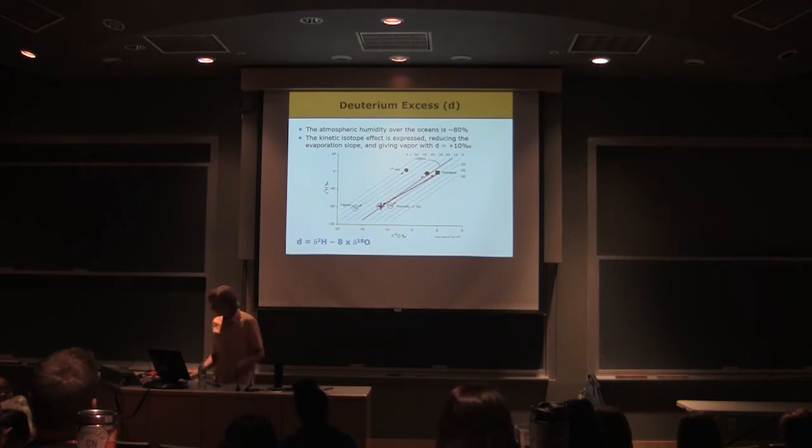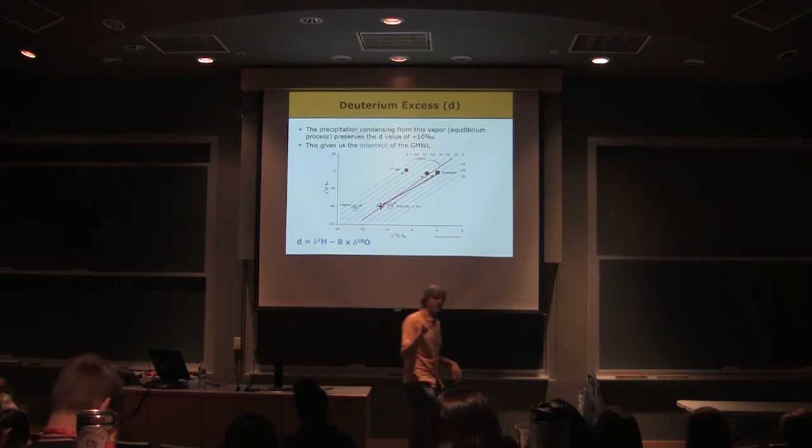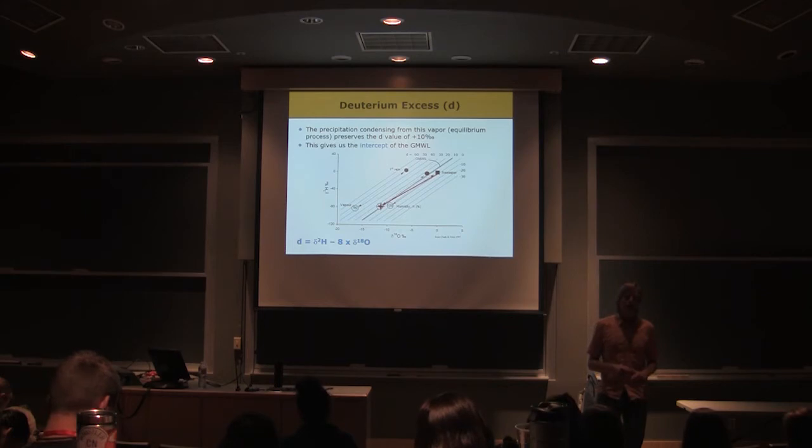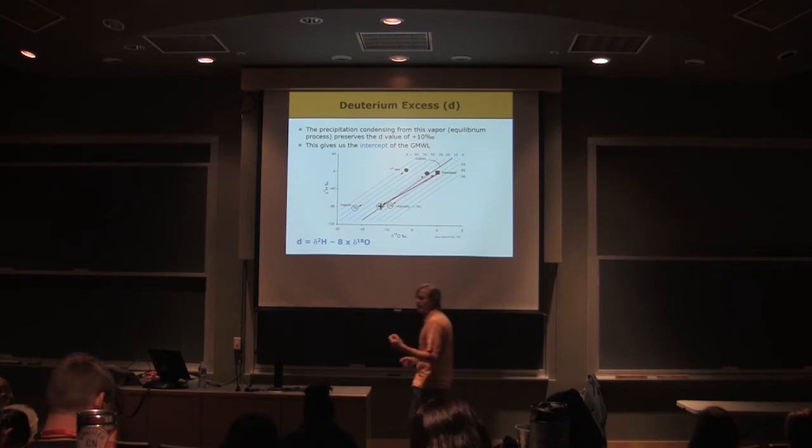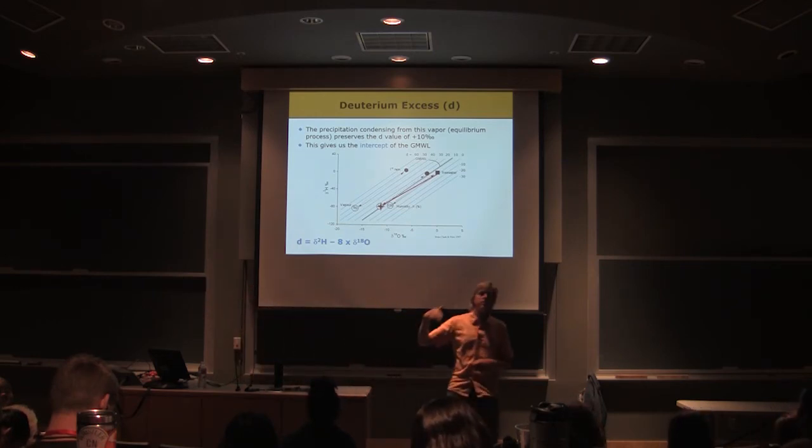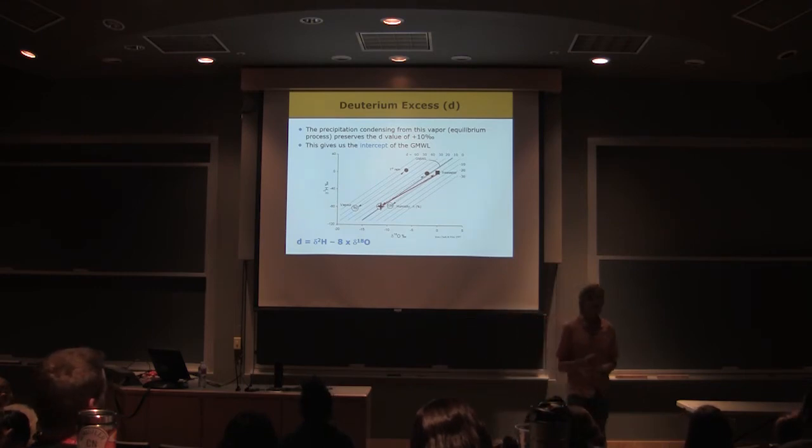So that gives us the intercept of the global meteoric water line because that vapor is the starting point for the whole Raleigh distillation cascade that follows, right? Over the oceans, we're evaporating that water. We're producing a vapor that has a d-excess of about plus 10. And then we move that vapor across the globe. And it rains out progressively. And that rain out affects the hydrogen isotope ratio and the oxygen isotope ratio, but it doesn't change the d-excess.